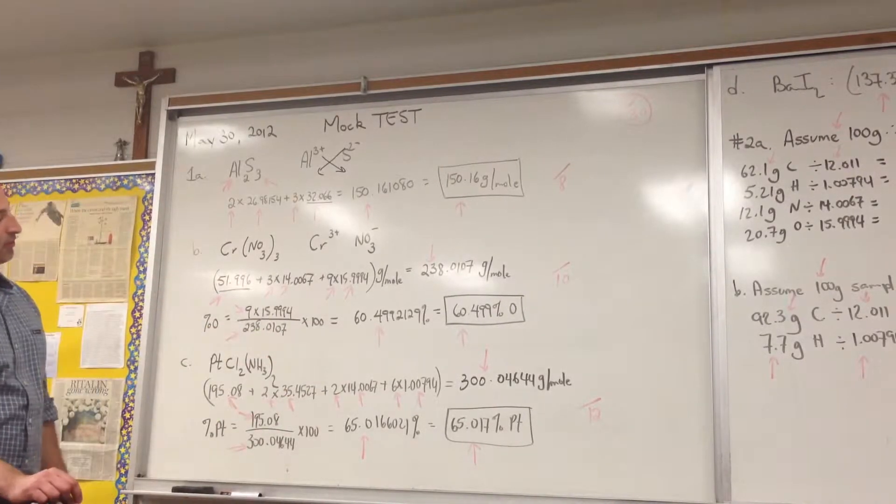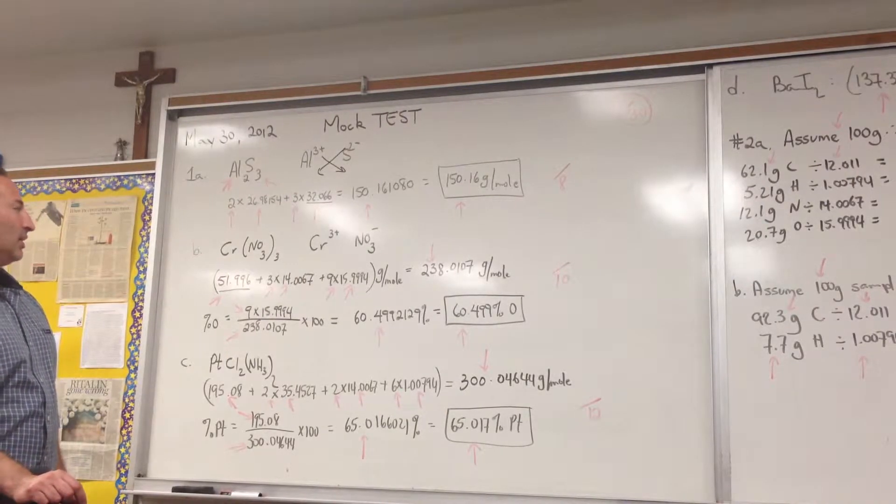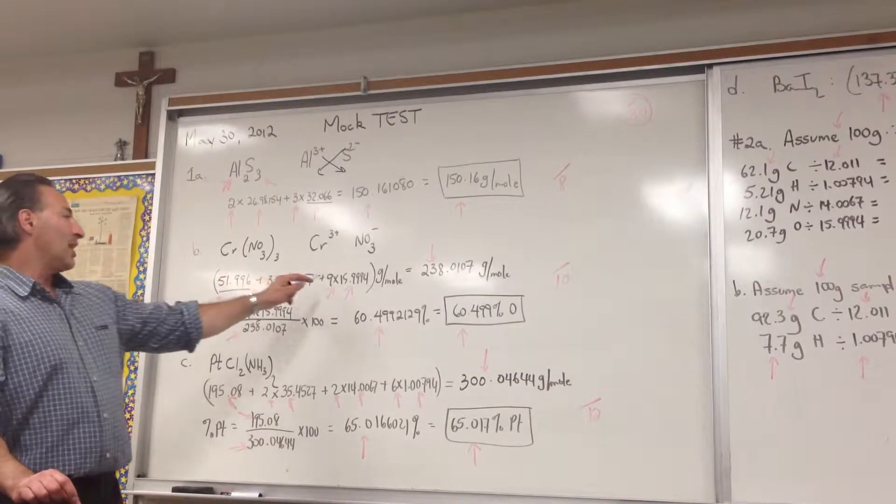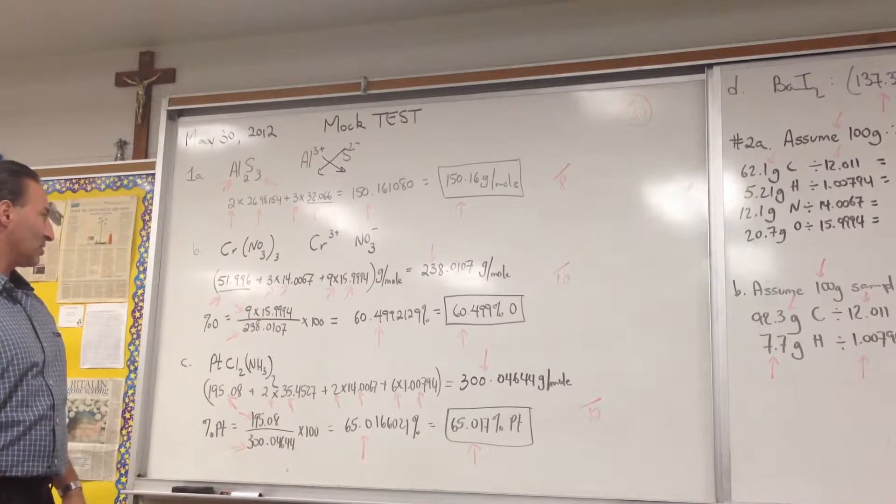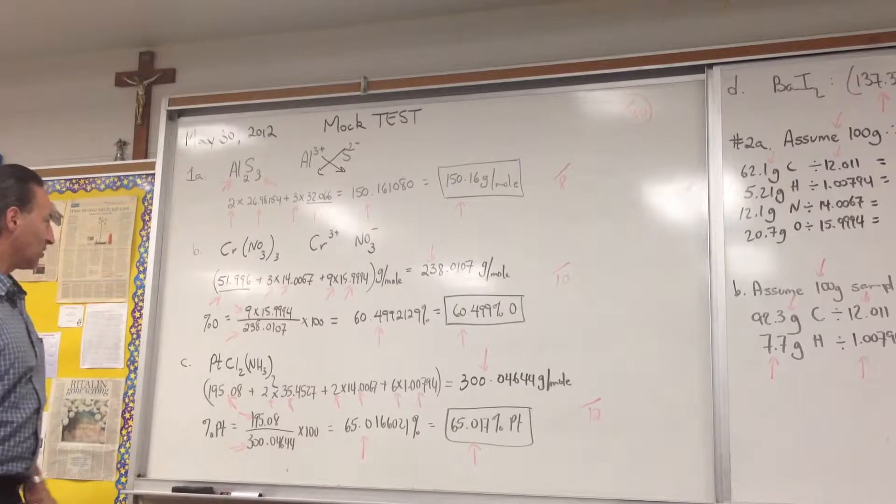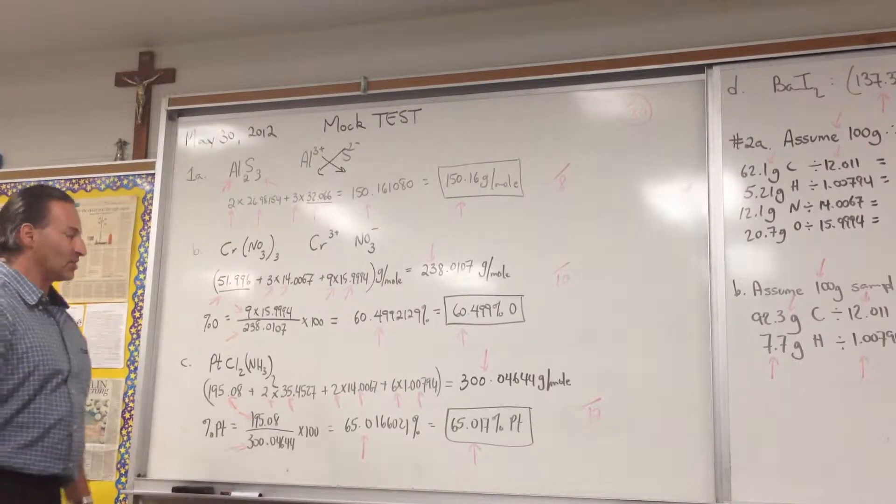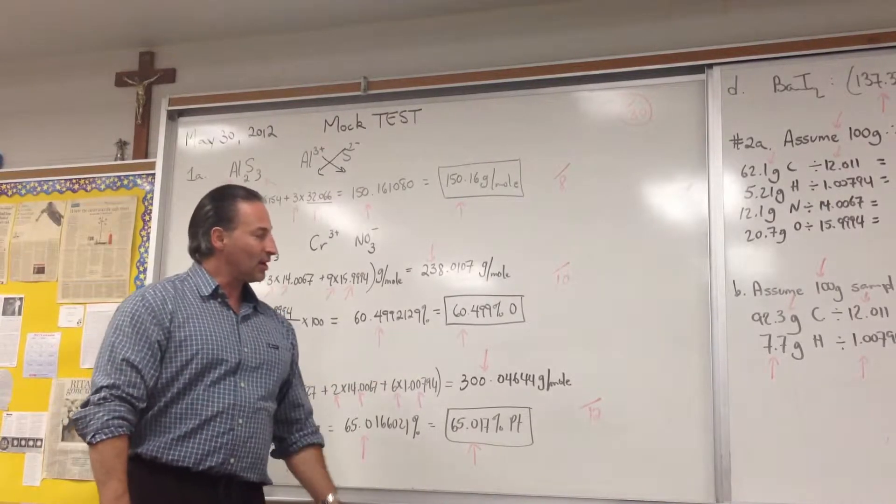It gives you a value of 60.4992129. Based on the significant figures that we have here, we're only allowed to report the value, the most accurate number we can report it to is five significant figures, because chromium is only reported to five significant figures. So it's 60.499% oxygen.